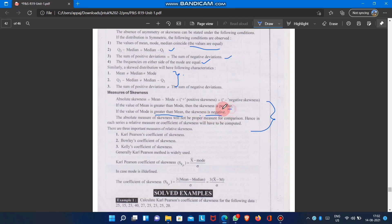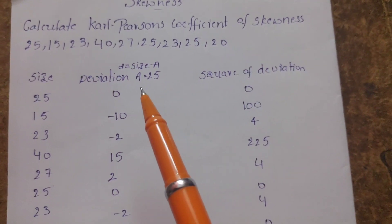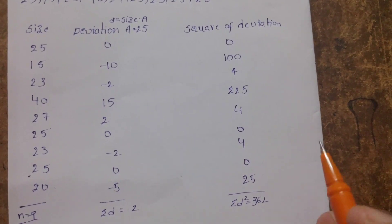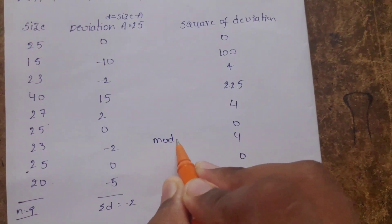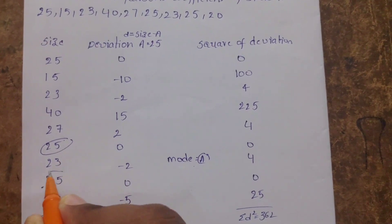Measure of skewness: absolute skewness equals mean minus mode. If mean is greater than mode, the skewness is positive. If mode is greater than mean, it's negative. Measures of skewness include Karl Pearson's coefficient, Bowley's coefficient, and Kelly's coefficient. For Karl Pearson's skewness, we use this formula involving mean, deviation, and square of deviation. The mode value is important here.